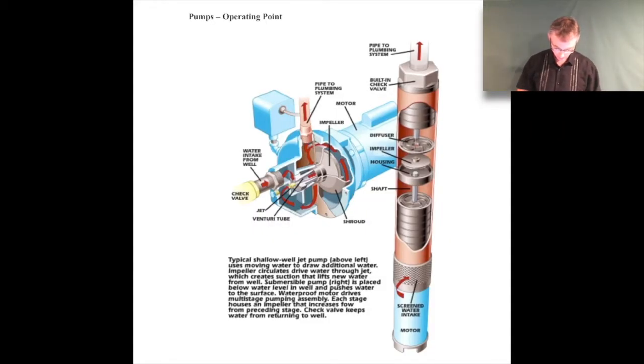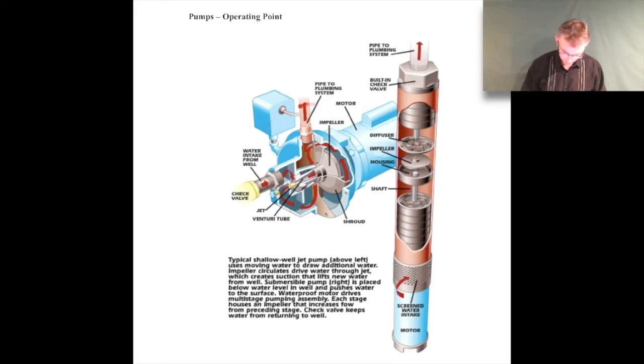In this video lecture we're going to talk about finding the operating point for a pump in a pipe system. The picture here is for a shallow well jet pump, and then we have a centrifugal style submersible pump over here on the right hand side.